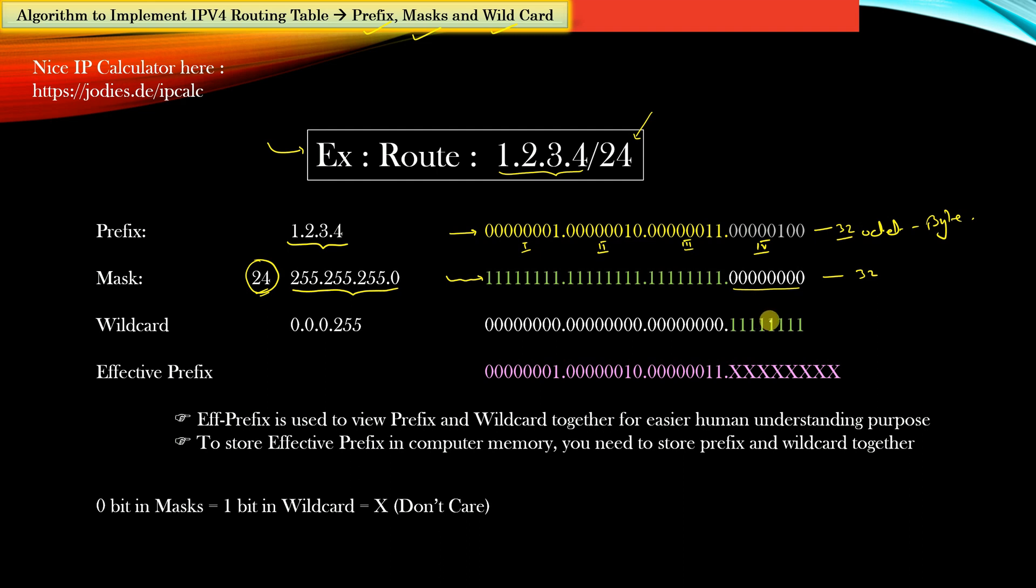Then comes the wildcard which is exactly opposite of mask. If you flip the bits of the mask then you get the wildcard. In CIDR notation the wildcard is expressed exactly opposite to that of the mask - you replace 255 with 0 and replace 0 with 255. In binary notation all the 1's will be converted to 0 and all the 0's will be converted to 1's.